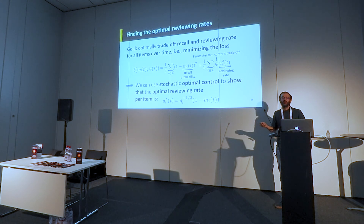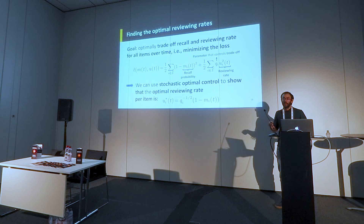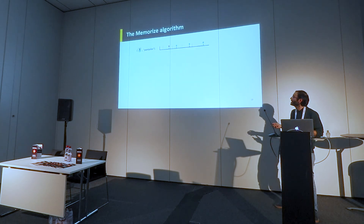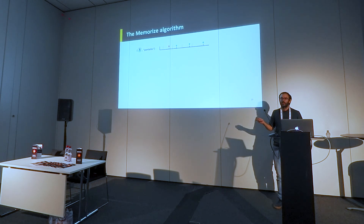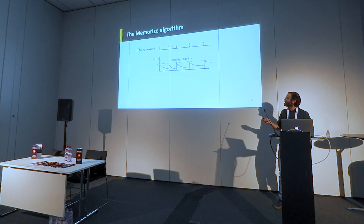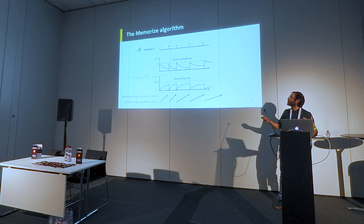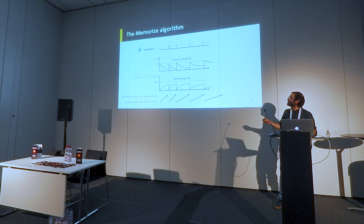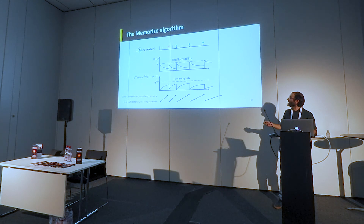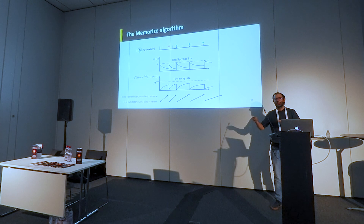Concretely: if you are very likely to recall something, the reviewing rate should be low — don't show it. If it is very likely you have forgotten an item, you should quickly show it. Visually, imagine the word 'pantalón': initially the recall probability is 1, then it starts to decrease as you forget. As you're forgetting, the reviewing rate increases, making it more likely the word is shown. Each time you show it, you update the rate — and you keep tracking how people forget while changing the reviewing rate accordingly.